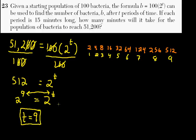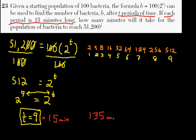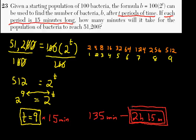You might say we're done — 9 minutes — but remember, the problem said that each time period is 15 minutes long, and t represents periods of time. So there have been 9 fifteen-minute intervals. You need to take 9 times 15 minutes, and 9 times 15 gives us 135 minutes, or equivalently, 2 hours and 15 minutes.